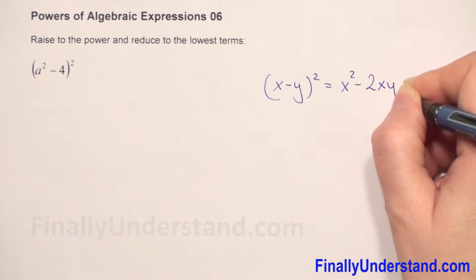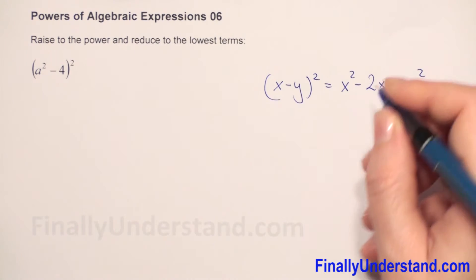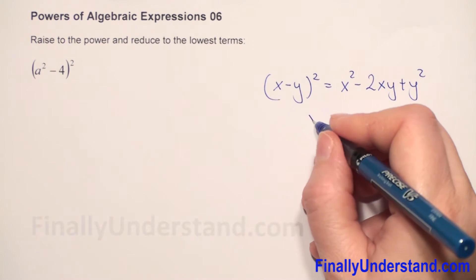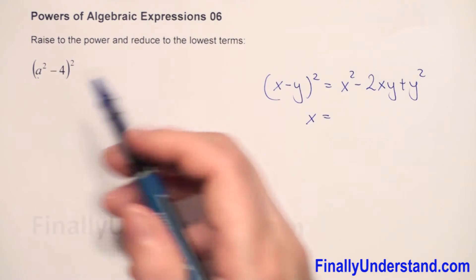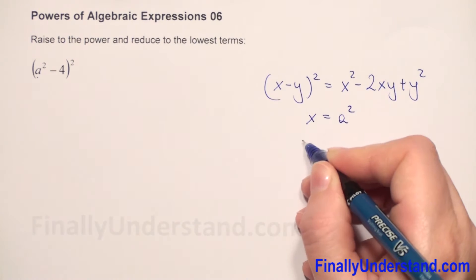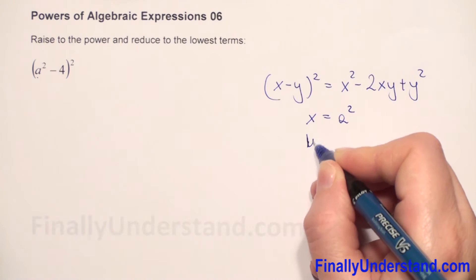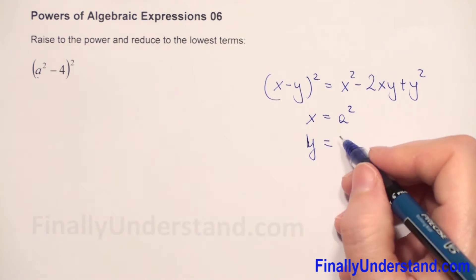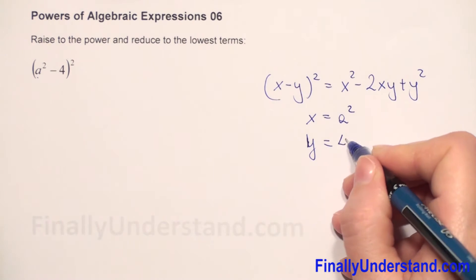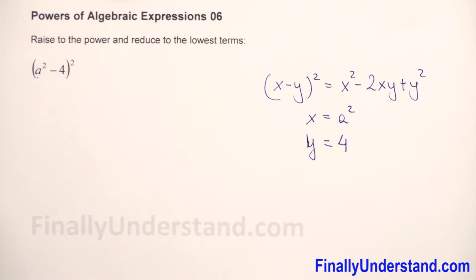minus 2xy plus y squared. In our example, x is equal to a squared and y is equal to 4.